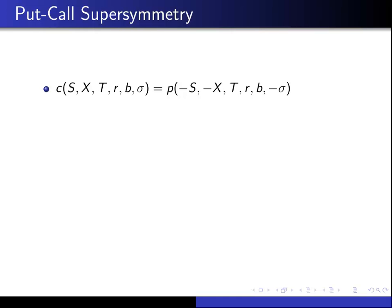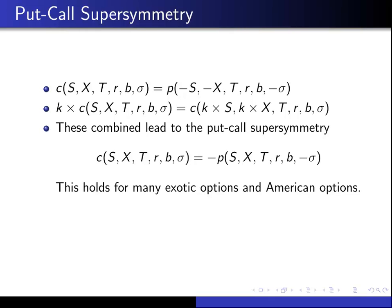We also have the symmetry that K times a CALL option is equal to the CALL option except the parameters S and X are multiplied by K. Using these two, we get our supersymmetry: the CALL option with parameters S, X, T, R, B, and Sigma is equal to minus the PUT option with the same parameters, except Sigma is replaced by minus Sigma. This identity holds for many exotic options and American options as well.